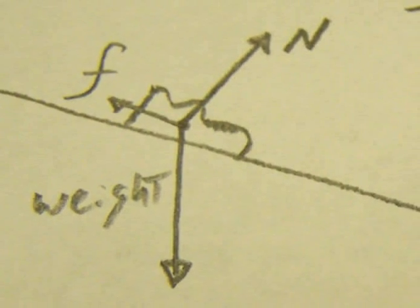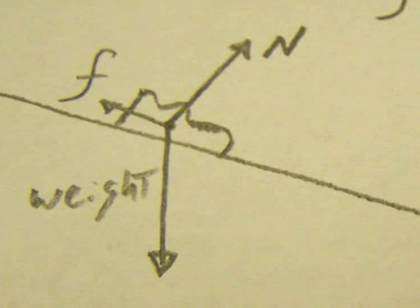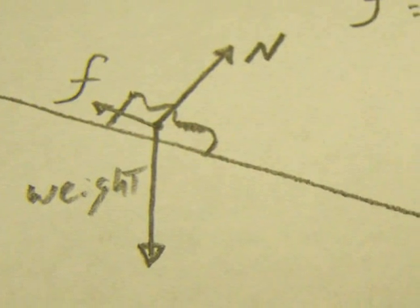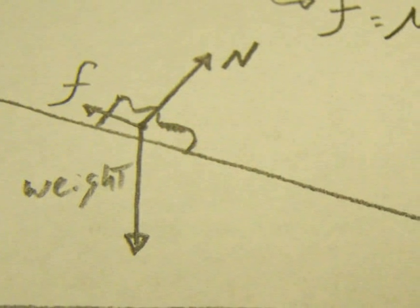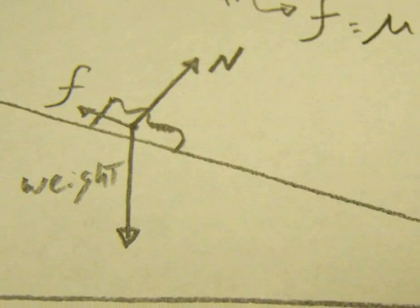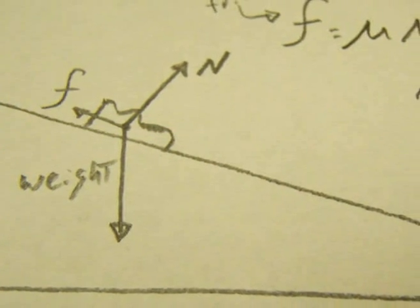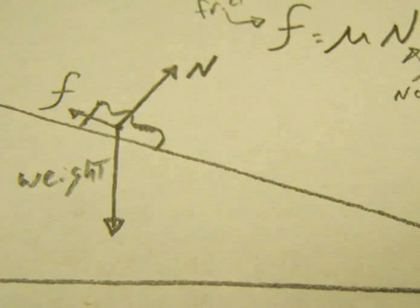The forces acting on the shoe, of course, are its weight, which is the force due to gravity, which will act straight down. The normal force, which acts perpendicular to the surface. And friction, which acts in opposition to motion, which would be sliding down the ramp.